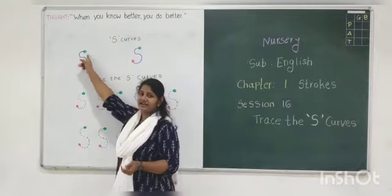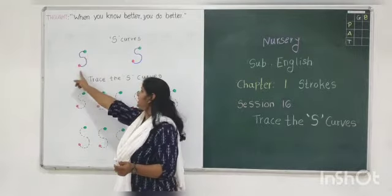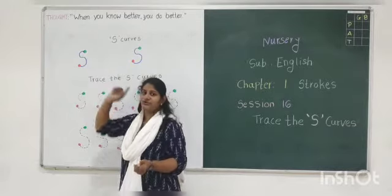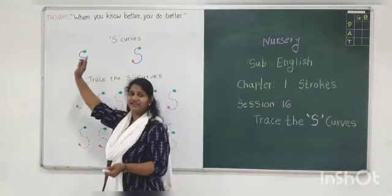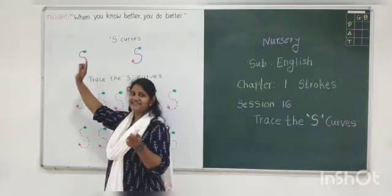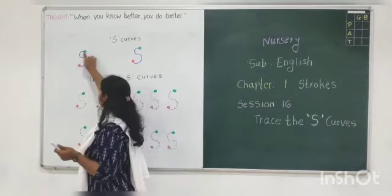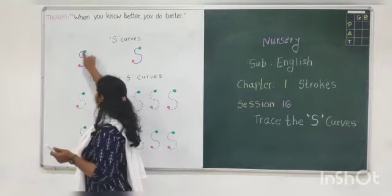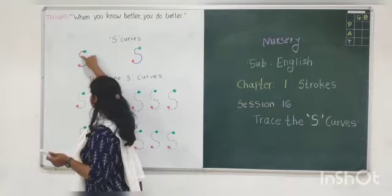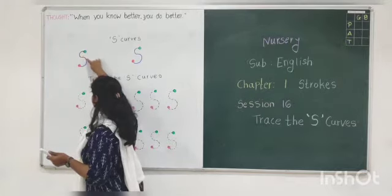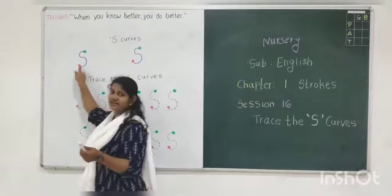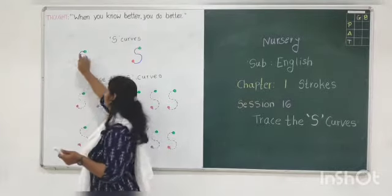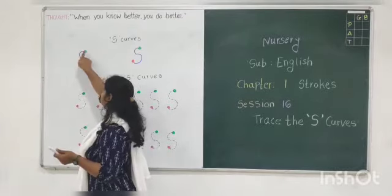This is a green dot and this is a red dot. So, you have to put your index finger on — which dot? Yes, the green dot. And you have to place this curve. One more time. Put your index finger on the green dot.